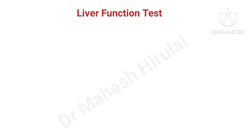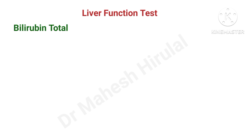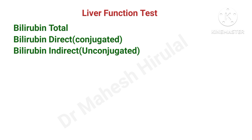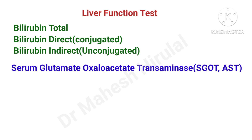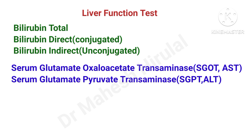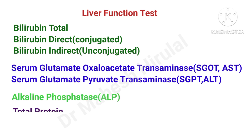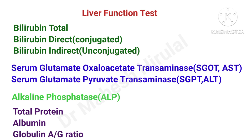The profile of liver function tests includes total bilirubin, direct and indirect bilirubin, enzymes like SGOT and SGPT (also called AST and ALT), alkaline phosphatase, total proteins, albumin, globulin and their ratios. Some labs also include prothrombin time and urea in the liver function test panel.